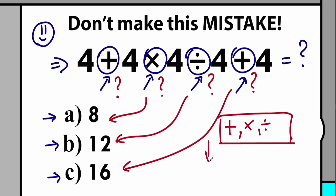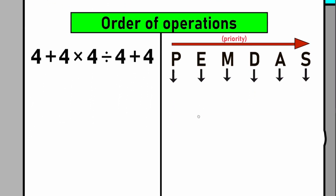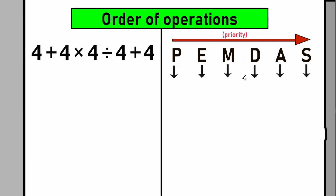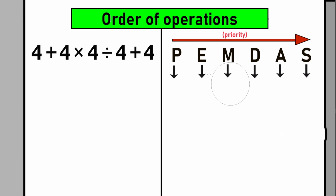For this, we need to know a little bit about order of operations. Here is our order of operations, called PEMDAS. Maybe you know it as BODMAS — it depends on what country you live in. BODMAS is mainly used in India and the UK, while PEMDAS is mainly used in Canada, USA, and Europe. When you use BODMAS, nothing changes — the result is the same.